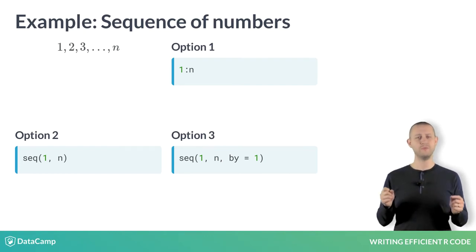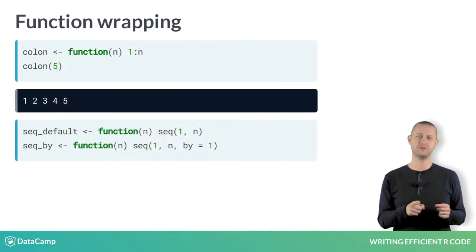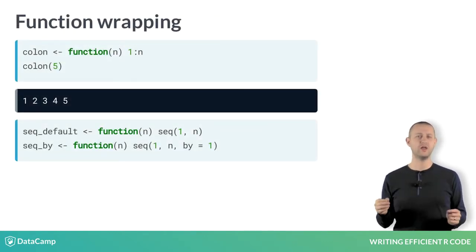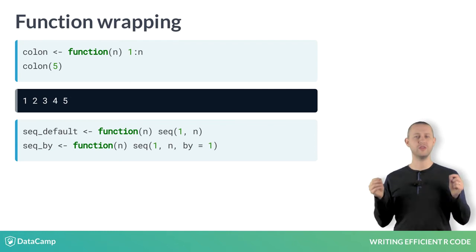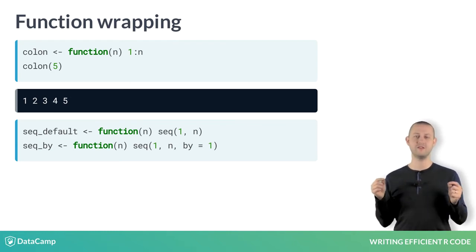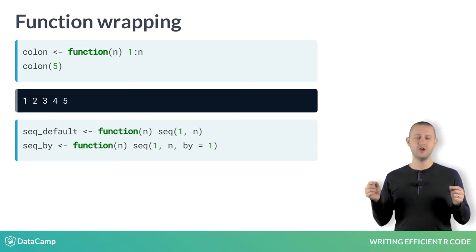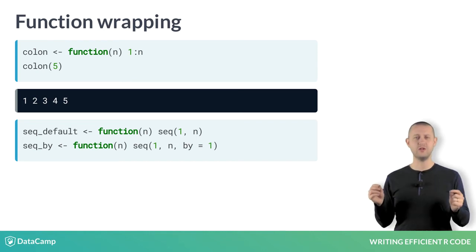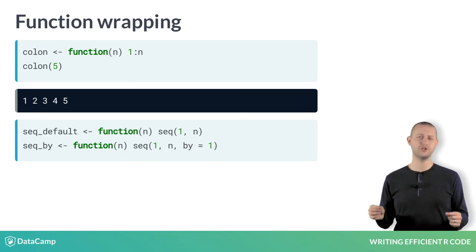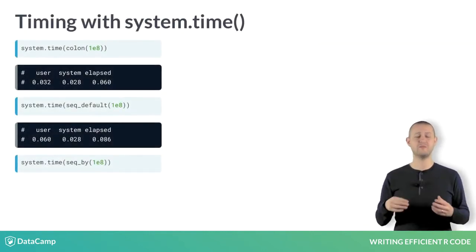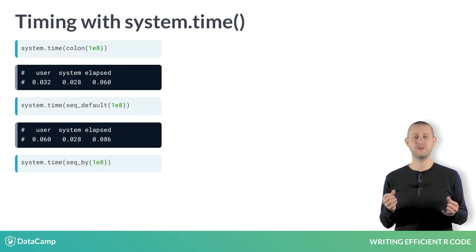We begin by wrapping the options in functions, and allow the sequence length n to be passed as an argument. Next, to determine how long the function takes to run, we wrap the function again, but this time with system.time.